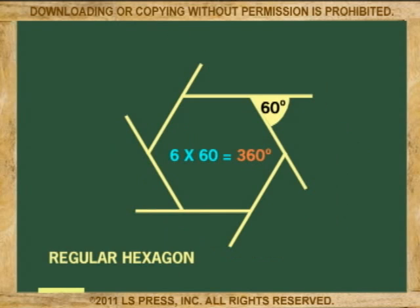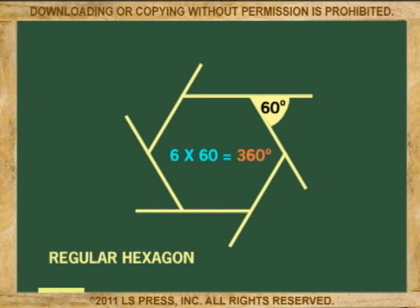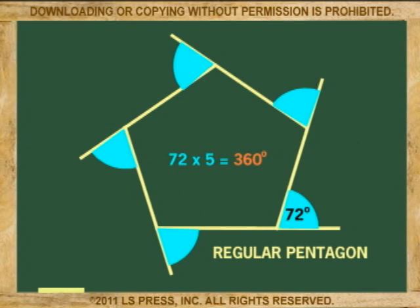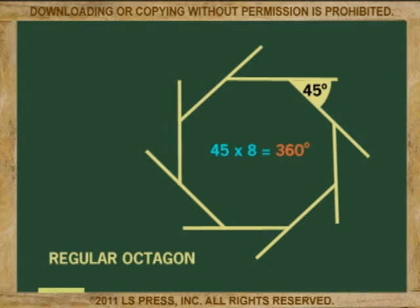See a pattern? It happens that the sum of all the exterior angles of any convex polygon is always 360 degrees.